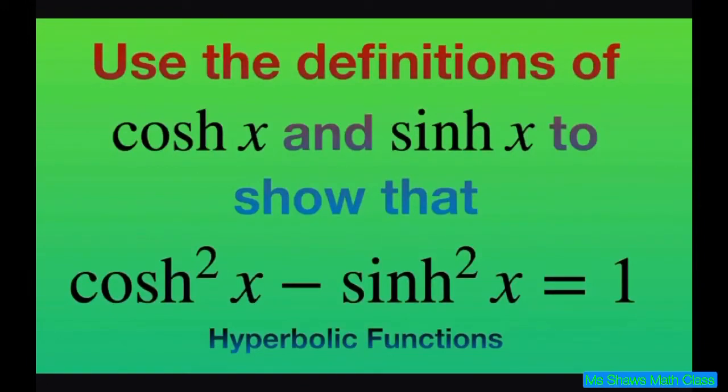Hey, everyone. We're going to use the definitions of hyperbolic cosine of x and hyperbolic sine of x to show that cosh squared x minus sinh squared x equals 1.